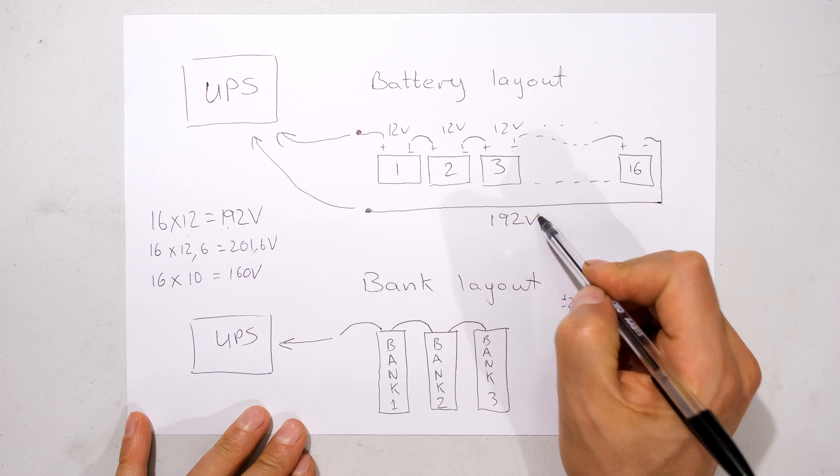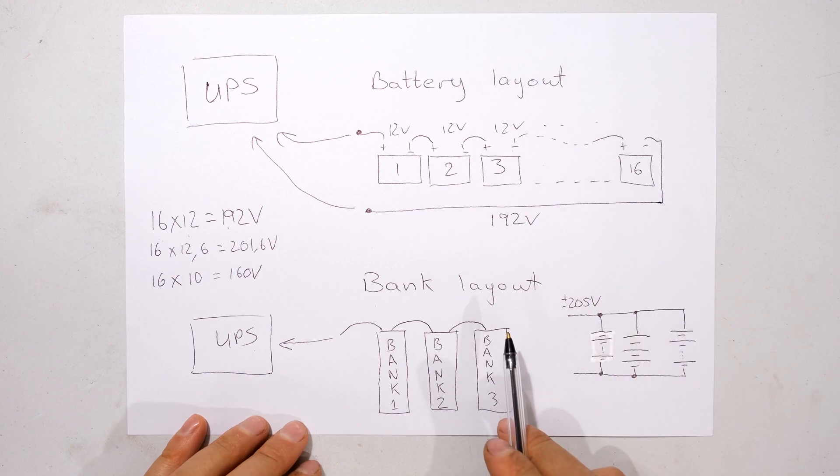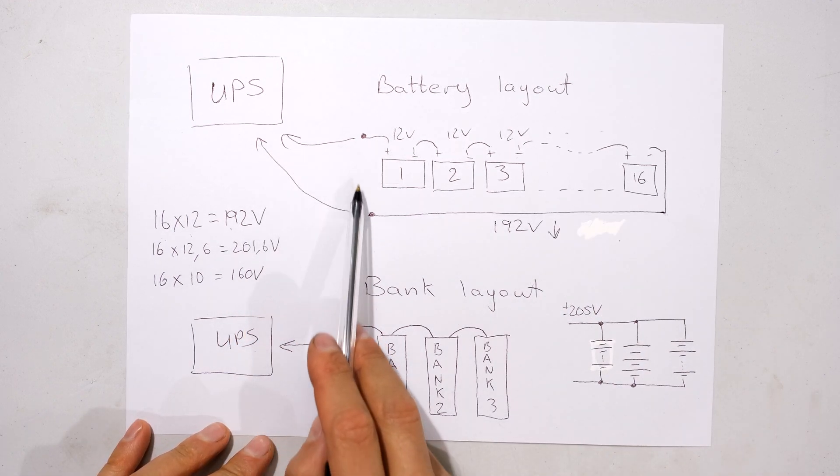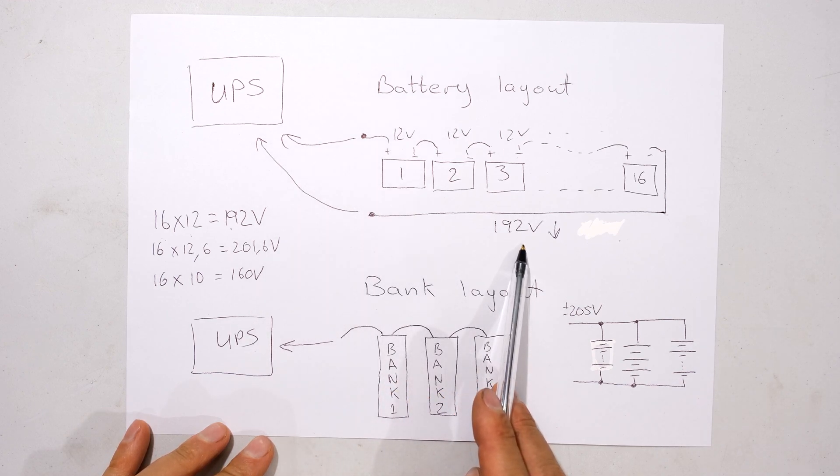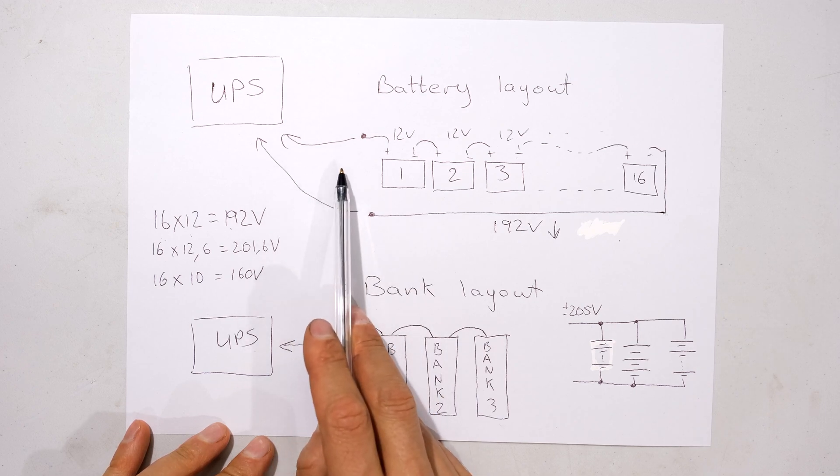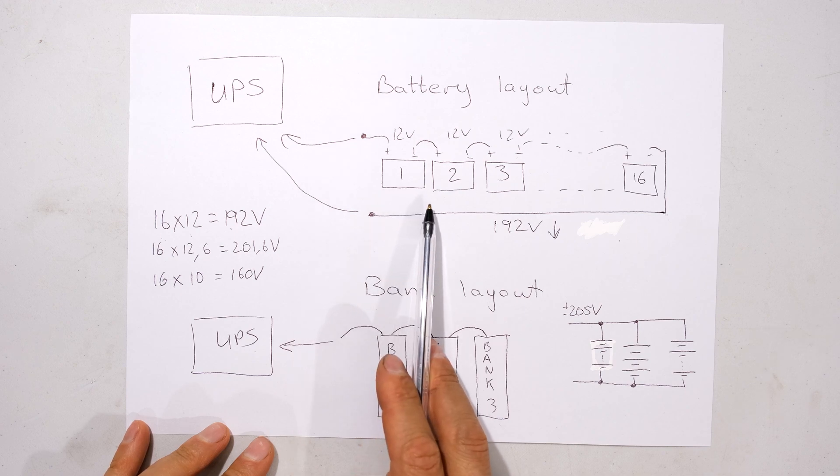The input to the UPS is 192 volts. That's how the battery bank internals are. How the UPS works is it measures this voltage. Under normal circumstances it will be at least 192 volts.